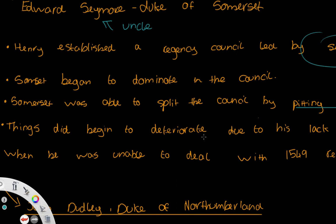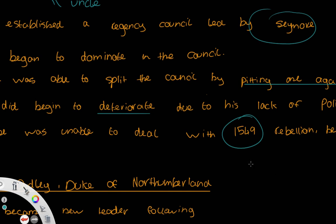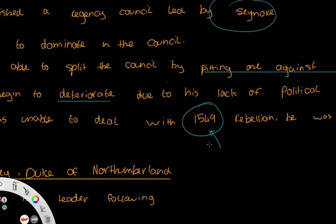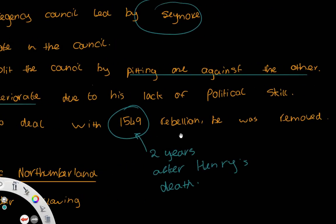Things began to deteriorate for Edward Seymour when he failed to deal with the 1549 rebellion — and notice that this is only two years after Henry's death. That really does give you an indication of how quickly things deteriorated. We'll talk about how things were already deteriorating before Henry's death, but only two years into Edward's reign we have a lack of support from the people, rising up into rebellion.